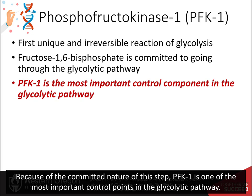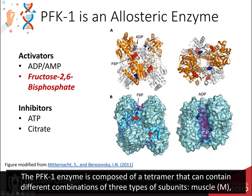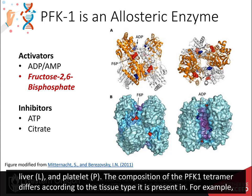Because of the committed nature of this step, phosphofructokinase 1 is one of the most important control points in the glycolytic pathway. The PFK1 enzyme is composed of a tetramer that contains different combinations of three types of subunits: muscle M, liver L, and platelet P.